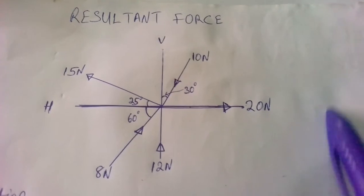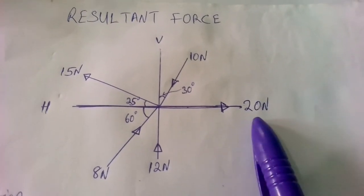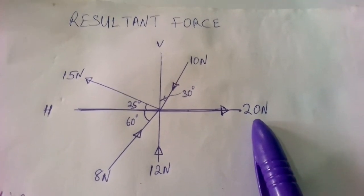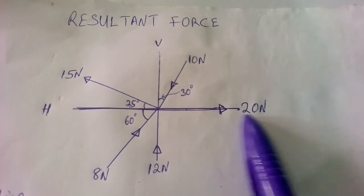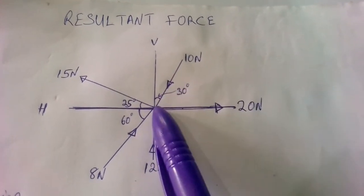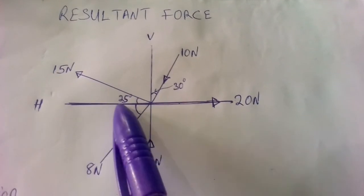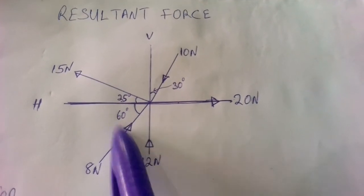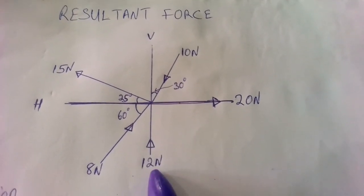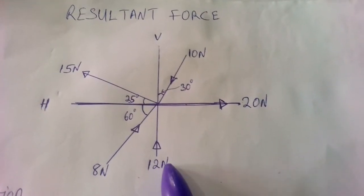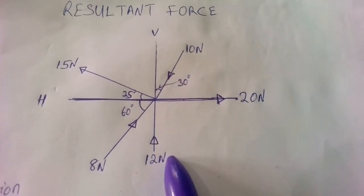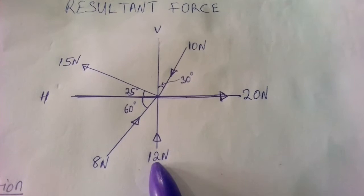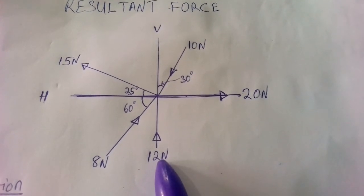As we can see here, we have a force of 20 Newton at horizontal, indicating there is no angle — the angle at which the force is acting is zero. We also have one of 10 Newton acting at 30 degrees, one of 15 Newton acting at 25 degrees to the horizontal, one of 8 Newton acting at 60 degrees to the horizontal, and another one of 12 Newton in vertical position, meaning it also has no angle.